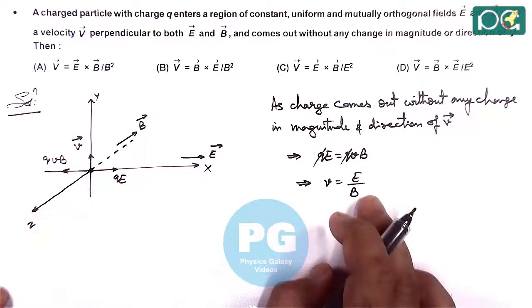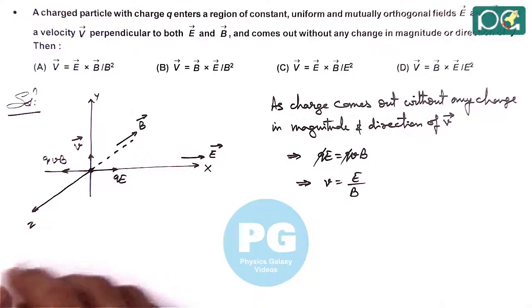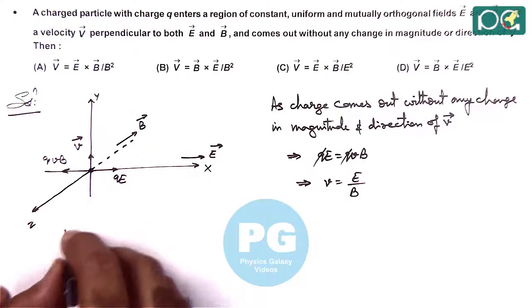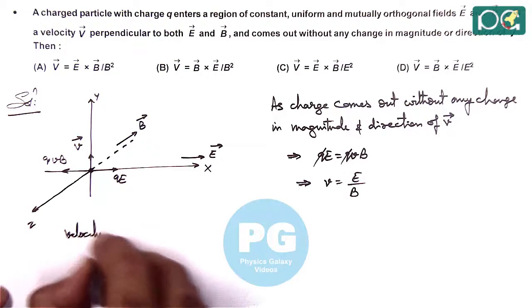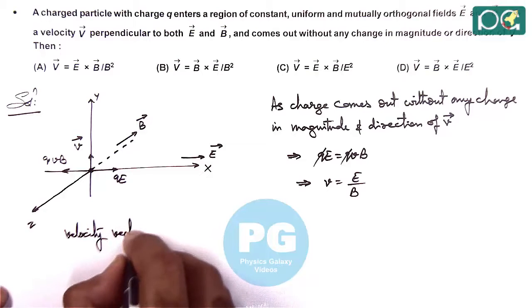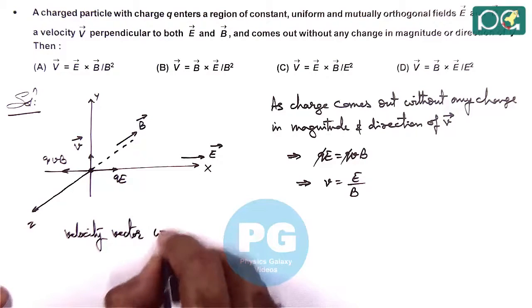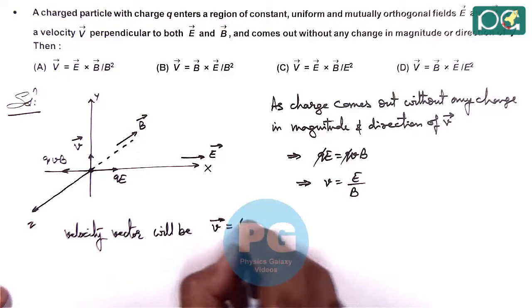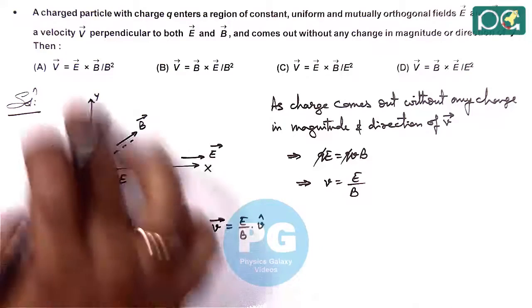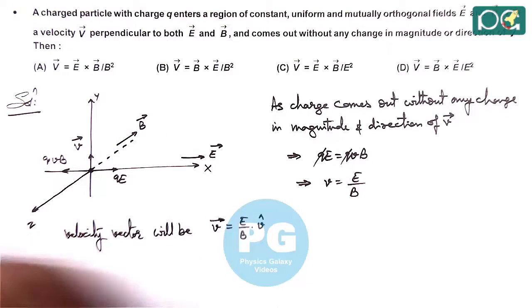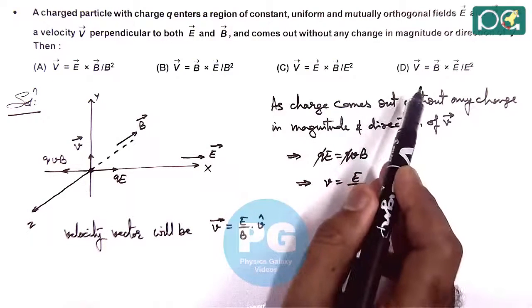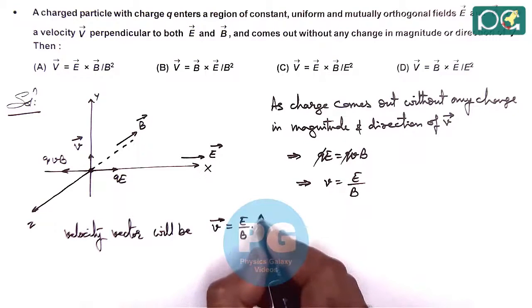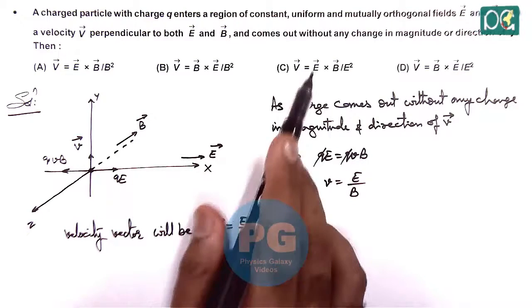So this is the velocity magnitude. We need to check the velocity vector, so velocity vector will be here we can write V vector is magnitude as E by B, multiplied by unit vector in y direction. And here with the options we can see, we need to substitute this unit vector in y direction in terms of E and B.